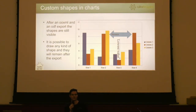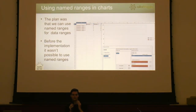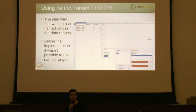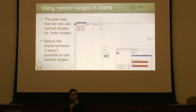Let's see another really interesting feature. Now we can use named ranges for data ranges in charts. On the picture, you can see that it wasn't possible to give any named ranges or data ranges, and the text box of the range was red. Also, the chart wouldn't appear. It is possible in Microsoft Office, and because of that, after an OXML import, the charts would disappear.